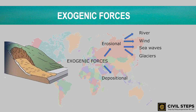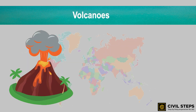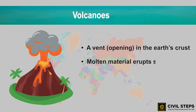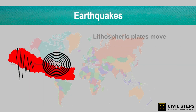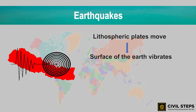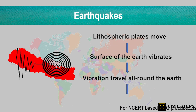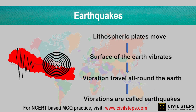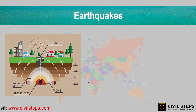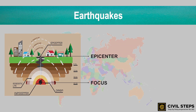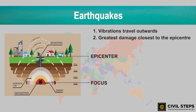Now let us talk about volcanoes and earthquakes. A volcano is a vent or an opening in the earth's crust through which molten material erupts suddenly. An earthquake occurs when the lithospheric plates move, causing the surface of the earth to vibrate. These vibrations can travel all around the earth and are called earthquakes. The place in the crust where the movement starts is called the focus, and the place on the surface above the focus is called the epicenter. The greatest damage is usually closest to the epicenter.